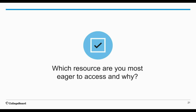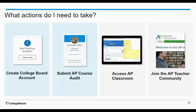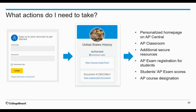As we segue to the next section, as a new AP teacher you may be wondering: what actions do I need to take to get started? We have four actions here: create a College Board account, submit an AP course audit, access AP Classroom, and join the AP Teacher Community. Today we are going to focus on two actions in particular — creating a College Board account and submitting an AP course audit — because these are foundational steps.